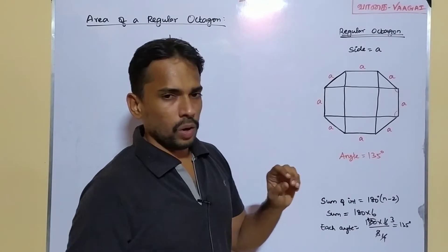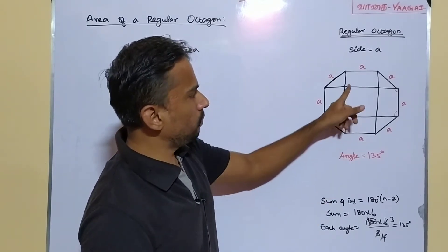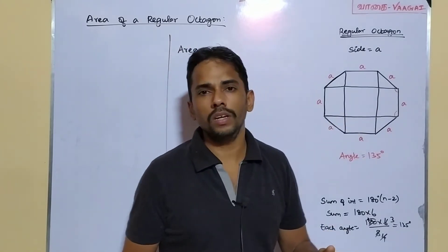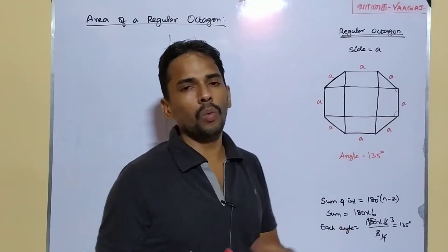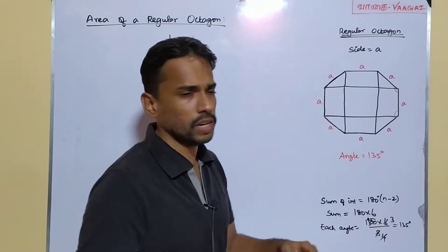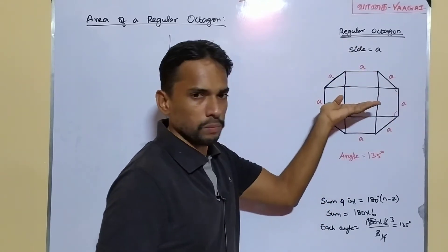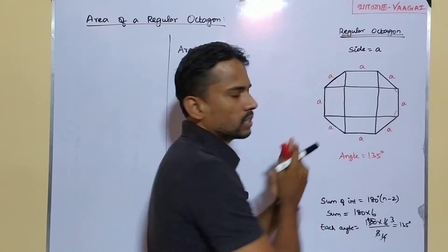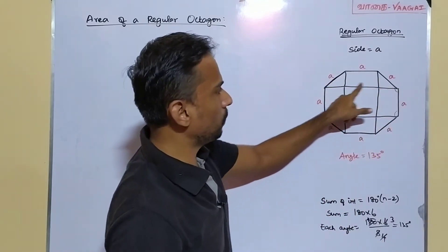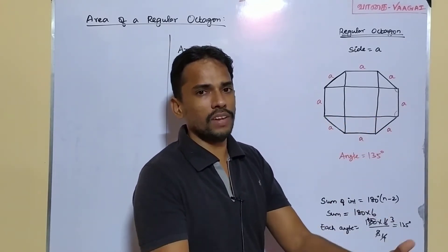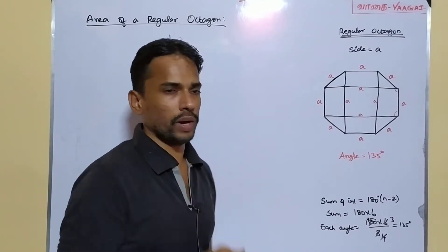Let's identify the shapes inside this octagon. The innermost shape is clearly a square — if you project the four opposite sides inward, you end up with a square. We can also say that this square has side equal to 'a'. At the corners we have 4 triangles, and we also have 4 rectangles.